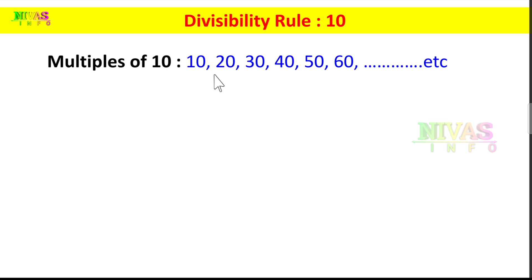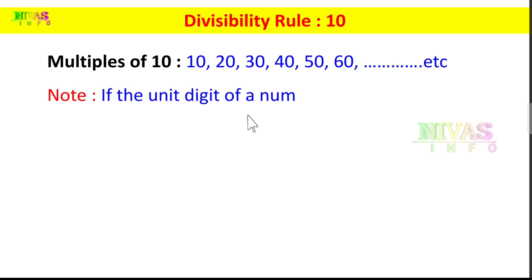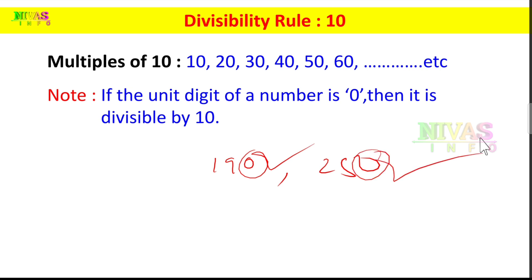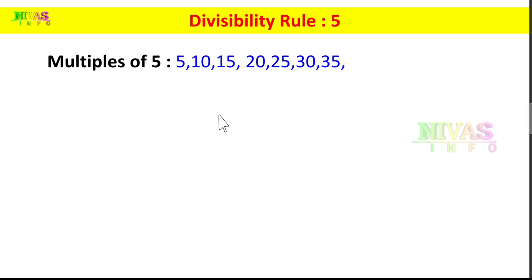If you look at the multiples of 10 — 10, 20, 30, 40, 50 — the unit's digit is always 0. So if a number ends in 0, then the number is divisible by 10.